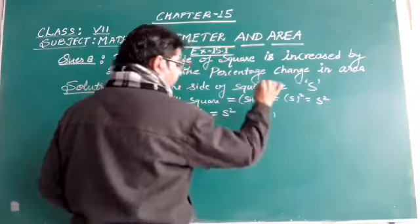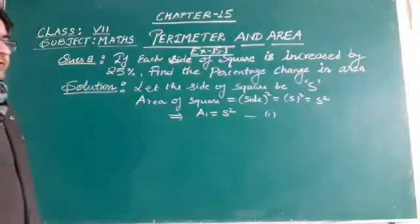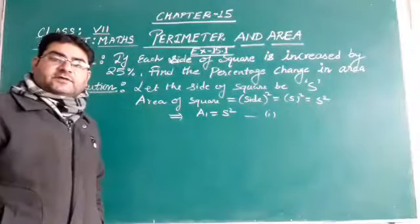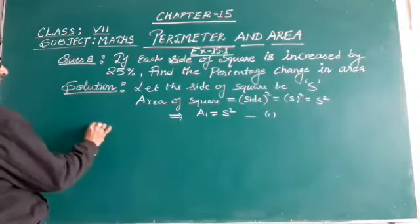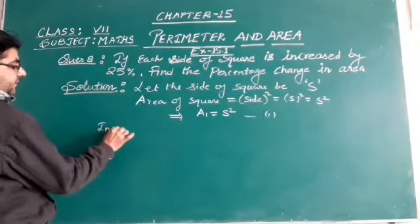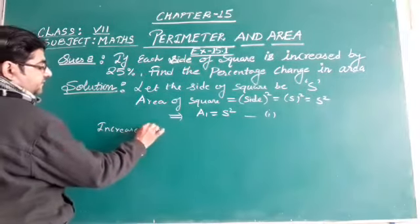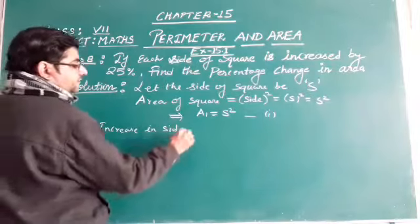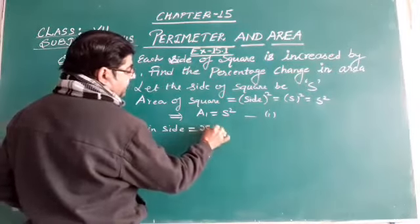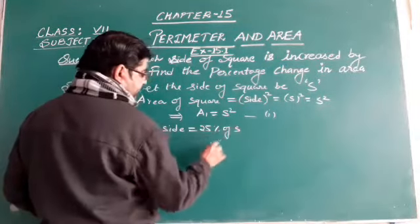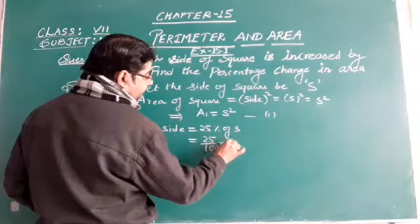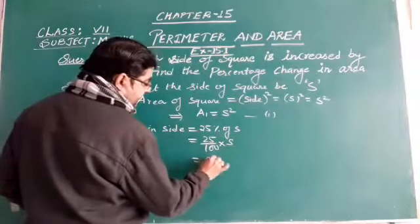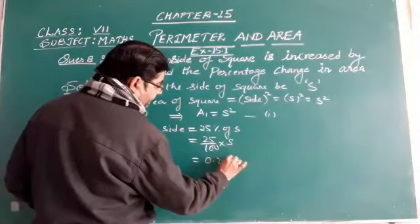It is given that we increase the side of the square by 25%, so the increase in side is 25% of S, which is 25/100 × S = 0.25S.